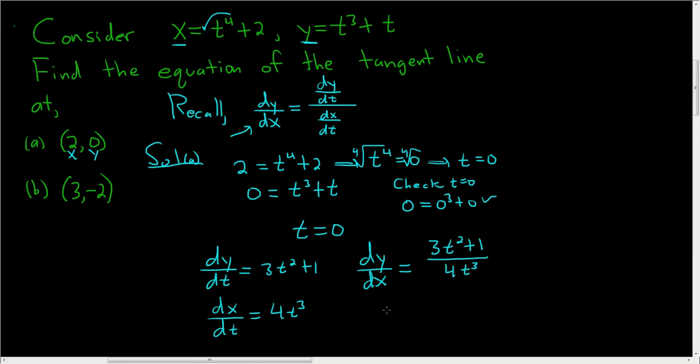Now we want dy/dx when t is equal to 0. So dy/dx when t equals 0, that's 3 times 0 squared plus 1 over 4 times 0. So 1 over 0, and that's undefined. So our tangent line has a slope that's undefined. So our tangent line is vertical.